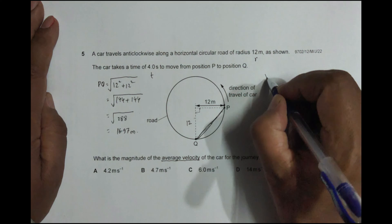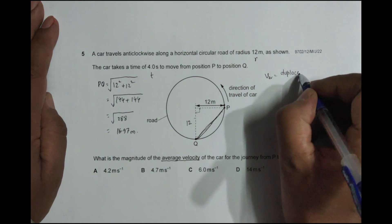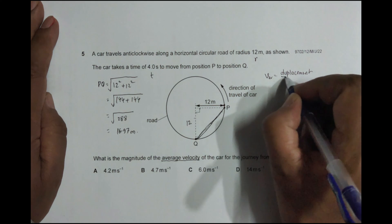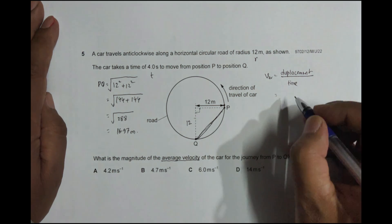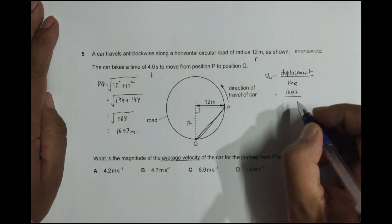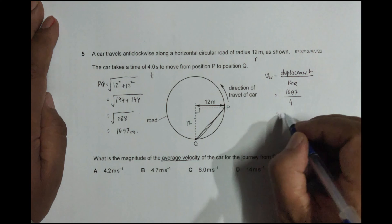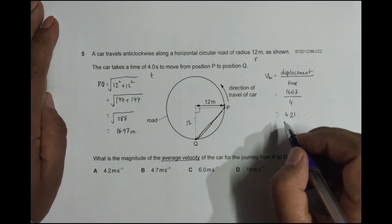This displacement is 16.97 and the time is 4 seconds. So when they divide it, 4 into 16, 4 into 8, 4 ones are 4, and so on, so it should be equal to 4.2 meters per second.